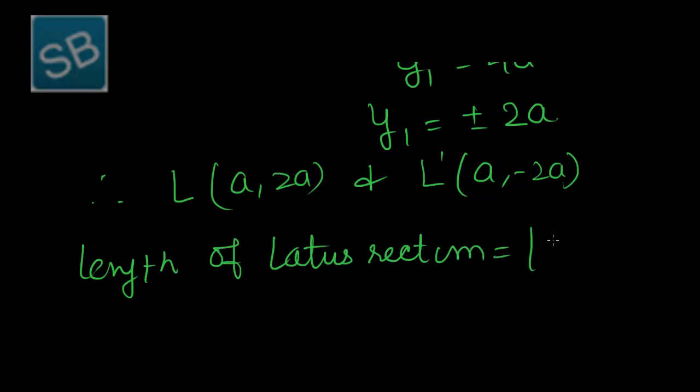That is |LL'|, using distance formula: √[(a-a)² + (2a-(-2a))²] = √[(-4a)²], which gives LL' length equal to √(16a²).